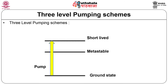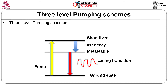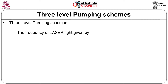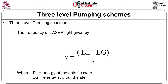A model of the three-level pumping scheme is shown in the figure. Three levels of the atom are used to obtain the laser. The first level is the ground level EG from where atoms are transferred to the level EP, called the pump level. EP should be a band of energy levels and a short-lived state. Atoms decay by non-radiative transition to level EL as soon as they are excited to EP. EL is a metastable level so atoms stay here for longer time and a large number of atoms accumulate at this level. The transition from EL to EG is radiative and gives laser light of frequency ν = (EL − EG) / h.